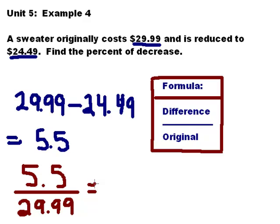I'm going to punch in 5.5 divided by $29.99 and I get .18339, etc.